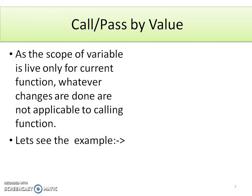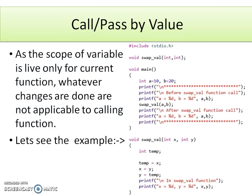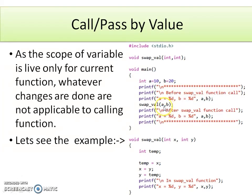We will see one more example in which we are trying to swap two numbers. Variables a and b are declared with some values. We need to perform the task of exchanging the values of both variables a and b by passing them to the swapVal function. Listen carefully — swapVal function is not returning anything; its return type is void.